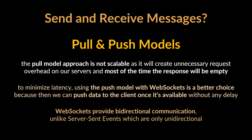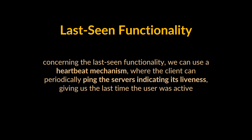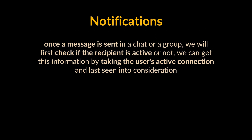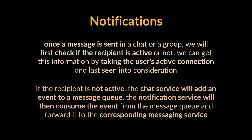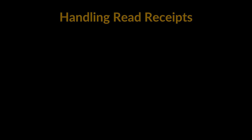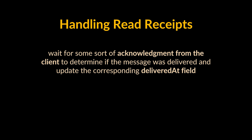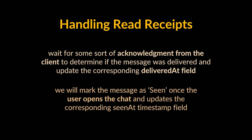For last seen functionality, we can use a heartbeat mechanism where the client periodically pings the servers indicating their liveliness — this will be handled by the presence service. For notifications, once a message is sent we check if the recipient is active using their active connection and last seen status. If the recipient is not active, the chat service adds an event to a message queue; the notification service then consumes that event and forwards the request to Firebase Cloud Messaging or Apple Push Notification Service based on the client's device platform. For read receipts, we wait for an acknowledgement from the client to update the delivered at field, and mark the message as seen once the user opens the chat, updating the seen at timestamp.